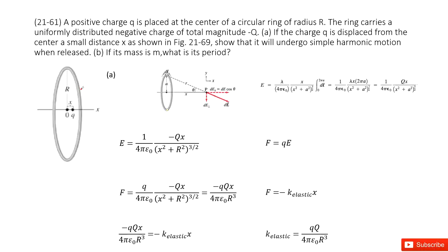This is just what we did in the example in this chapter, so you can check your textbook. We did the work on this ring already. We found that we only need to consider the electric field in the x-direction, as the y-direction components cancel. We have the function for the electric field at position p along the x-axis.